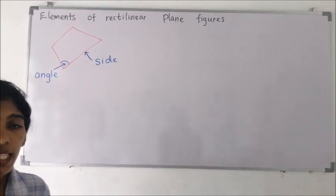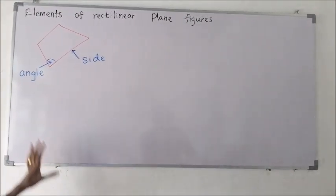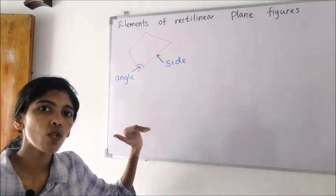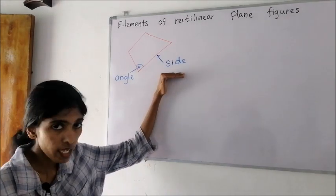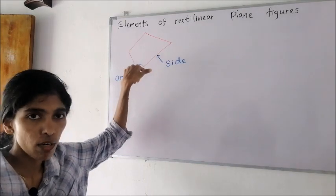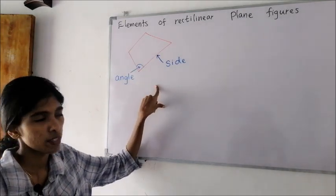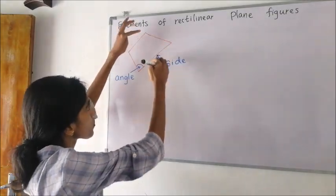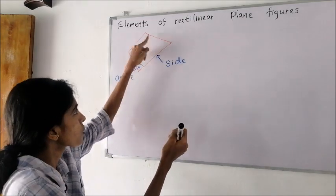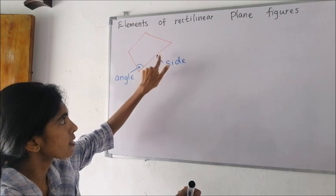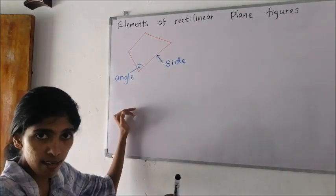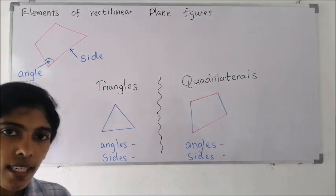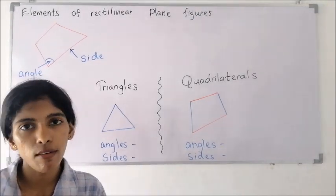Now we will learn about the elements of a rectilinear plane figure. The elements are the sides and the angles. In a rectilinear plane figure there are straight line segments — those straight line segments are called sides. Sides are one element. Angles are also elements — when two sides meet at a vertex, an angle is formed. This quadrilateral has four angles and four sides. So the sides and the angles are the elements of a rectilinear plane figure.